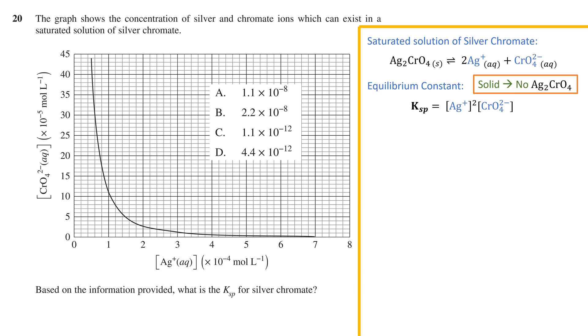Now, to find values to plug into the expression, we use the plot. The plot on the graph represents all the possible combinations of silver and chromate ion concentrations in a saturated solution. All these pairs of points represent equilibrium concentrations of the silver and chromate ions in a saturated solution.